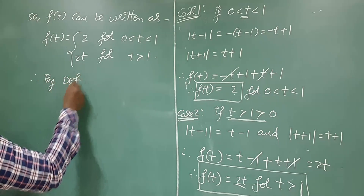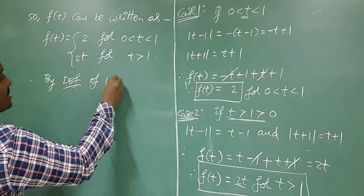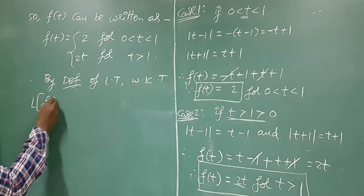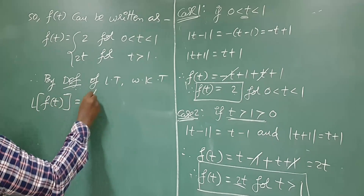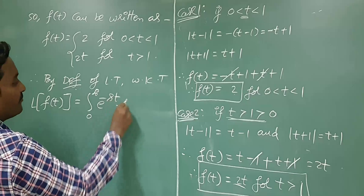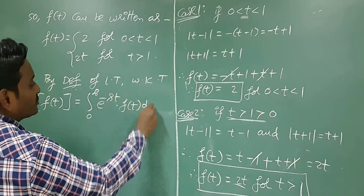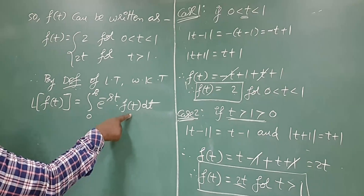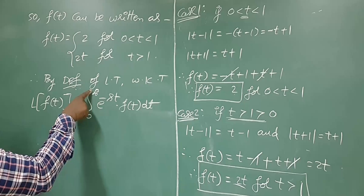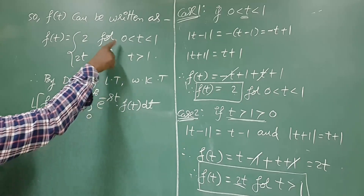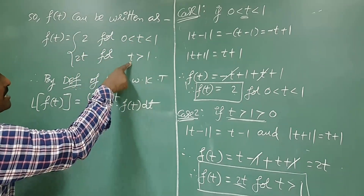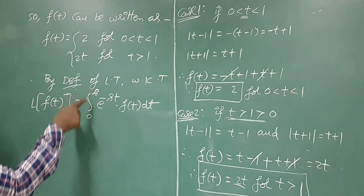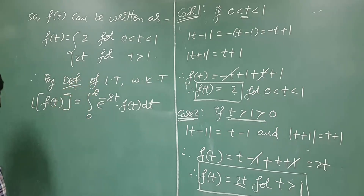By the definition of Laplace transformation, we know that L{f(t)} equals the integral from 0 to infinity of e to the power minus st times f(t) dt. Here f(t) is not defined directly over the entire range 0 to infinity — our function is defined differently on 0 to 1 and on t greater than 1. So we divide the integration as 0 to 1 plus 1 to infinity.